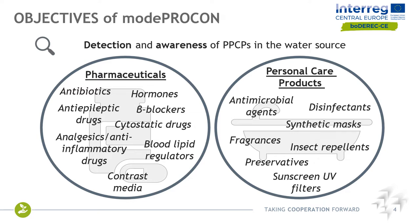Among pharmaceuticals, we can mention hormones, antibiotics, beta blockers, and so on. Among personal care products, we can mention disinfectants, antimicrobial agents, and for example, insect repellents or fragrances. All these chemical species are generally found at very low concentrations in the environment, which makes it a challenge both for laboratory facilities as well as for modeling to properly describe their behavior in the environment.